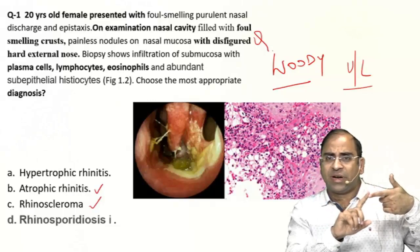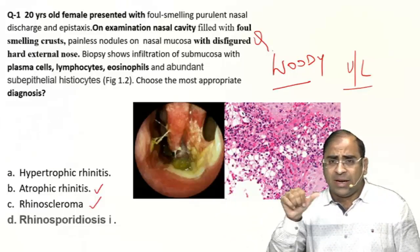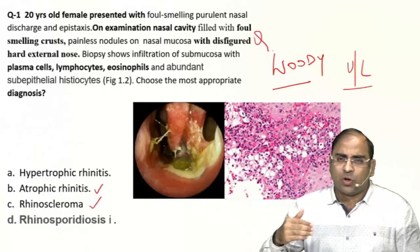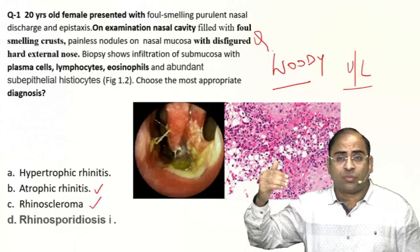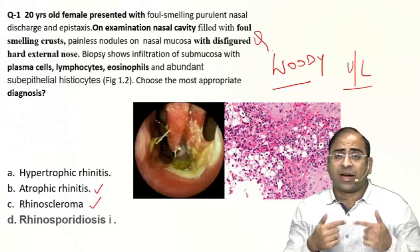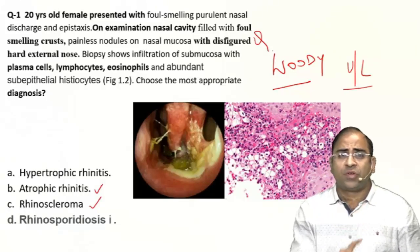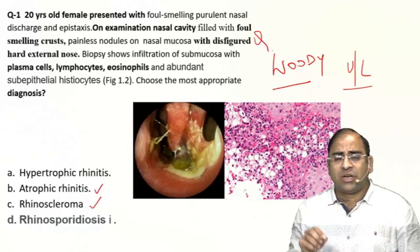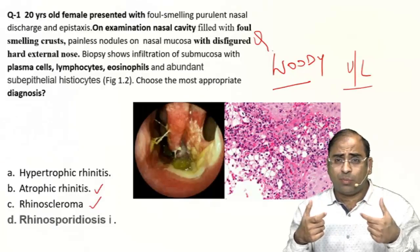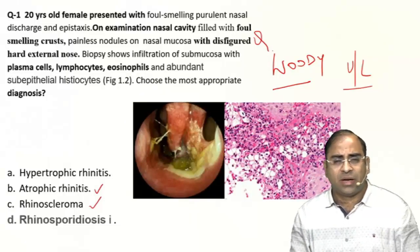Hypertrophic rhinitis treatment: laser — specifically KTP laser, which stands for potassium titanyl phosphate laser. Atrophic rhinitis: medical treatment, nasal cleaning, and surgeries — in older times, Young's operation and modified Young's operation; now we do injection of Teflon into the lateral wall, also called Loten's procedure. Rhinoscleroma: medical treatment — streptomycin and tetracycline. Rhinosporiosis: surgical excision, but it bleeds a lot, so cautery at the base is mandatory — a high-yield MCQ point.